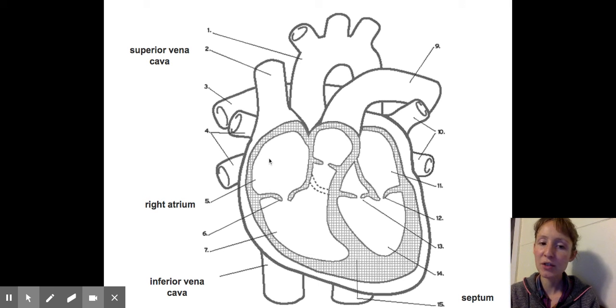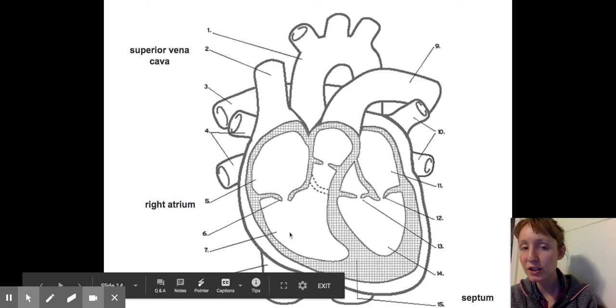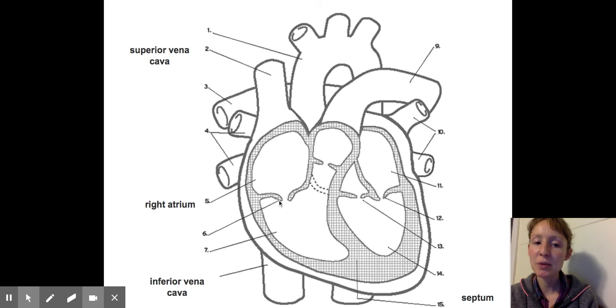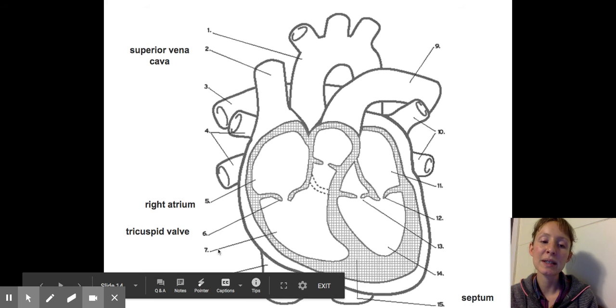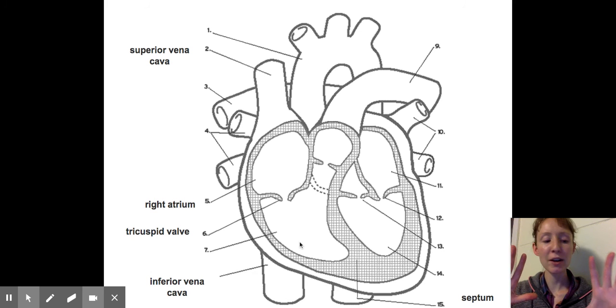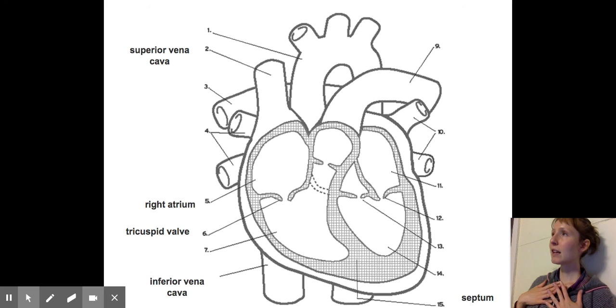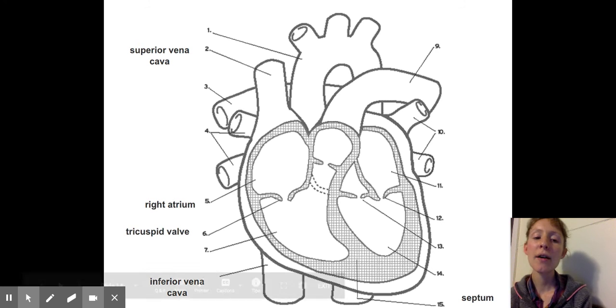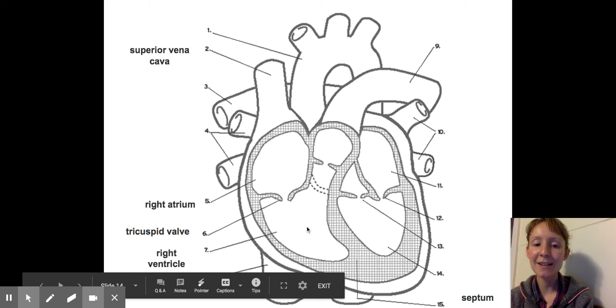Now, in order to get the right atrium to the right ventricle, it's going to have to pass through this valve, which is the tricuspid valve. Now, you should know what number seven is based on where it is located on this heart. Keep in mind, if you're looking at your diagram, you're like, but this is the left side. Think about it if you're looking at a person's chest. It would be their right. Does that help? So number seven would be the right ventricle.